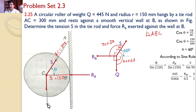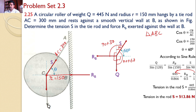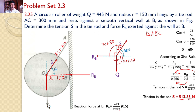Given that Q equals 445, substituting: 445 divided by sine 120 (which is 0.866) equals RB divided by sine 150 (which is 0.5), equals S divided by sine 90 (which is 1). Taking the first and third expressions: tension S equals 445 divided by 0.866 multiplied by 1, which gives S equal to 513.86 newtons. Taking the first and second expressions: reaction force RB equals 445 divided by 0.866 multiplied by 0.5, which gives RB equal to 256.93 newtons. These two are the answers for this problem.